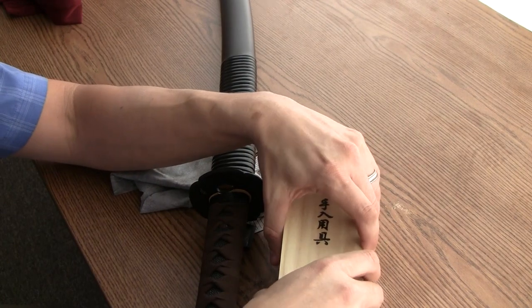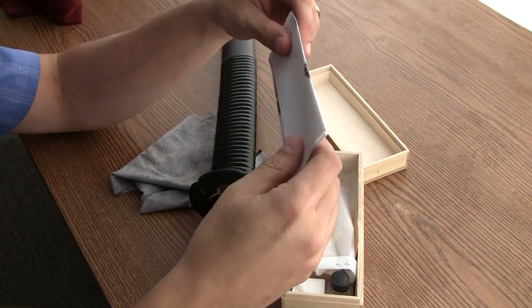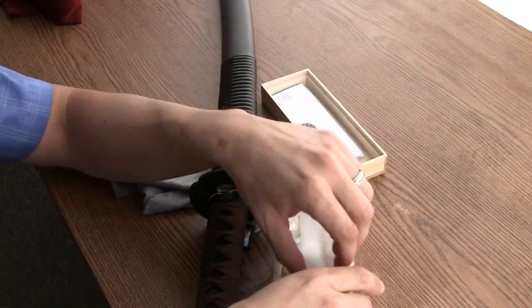Each Tori comes with a maintenance kit. It's nice little wooden presentation boxes. A little information on how to use everything in here.